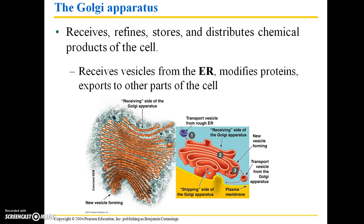The Golgi apparatus receives, refines, stores, and distributes chemical products of the cell. It receives vesicles from the ER, modifies the proteins, and exports them to other parts of the cell — you can think of it as receiving and shipping. Here is a colorized SEM showing a new vesicle forming at one end. In an illustrated depiction, a transport vesicle is sent from the rough ER to the receiving side of the Golgi apparatus, and new transport vesicles then form and move toward the plasma membrane of the cell.